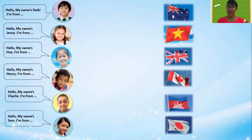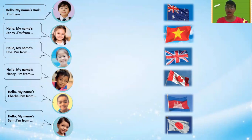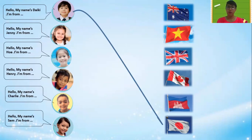Now you look at the pictures of the boys and girls. You can see some flags, so you remember the country. Bài này các em sẽ nhìn xem và nhớ các bạn đến từ quốc gia nào. Now you look at number one — Daiki. Hello, my name's Daiki. I'm from — you remember — from Japan. You have five seconds to finish.